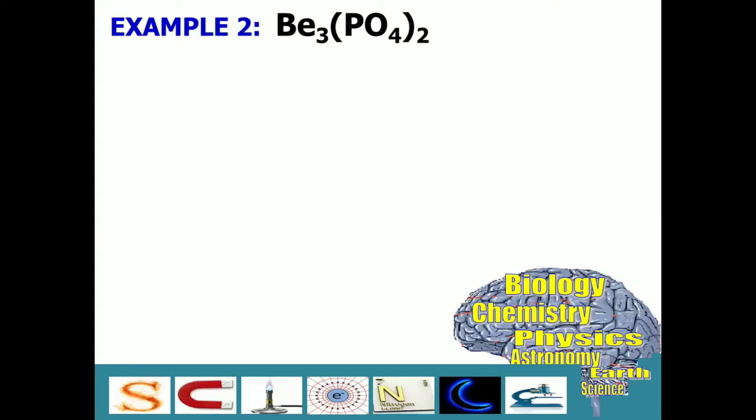Same procedure will be done. We will list down all the elements present in the chemical formula. We got three atoms of beryllium. But how about those atoms or elements inside the parentheses? We have to multiply 2 to them. So, 2 times 1 for phosphorus is 2. Then, 2 times 4 for oxygen, so the result is 8. And we will check their atomic masses.